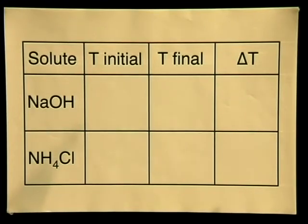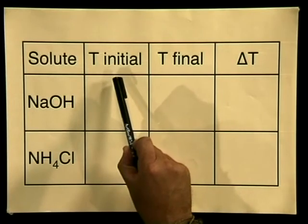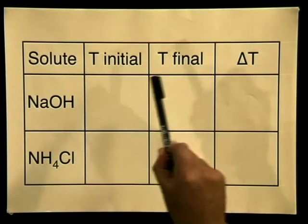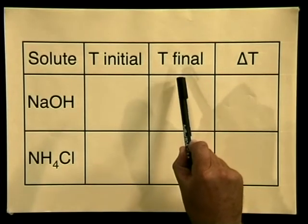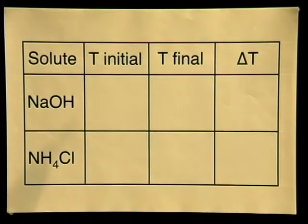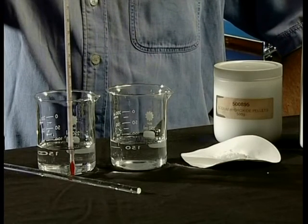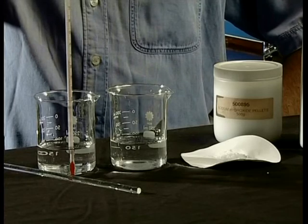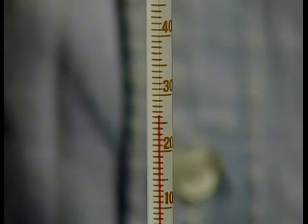Here you can see we need to record the initial temperature before adding the solute, and the final temperature is the temperature of the solution after all the solute has dissolved. First, you need to measure the temperature of the solvent before adding the solute, and have recorded the readings in a table. The temperature of the solvent is 26 degrees Celsius.